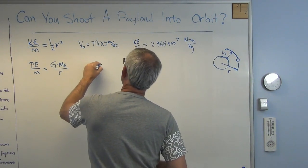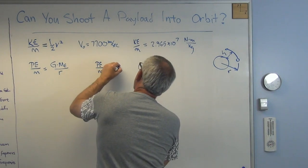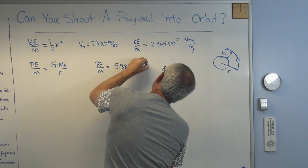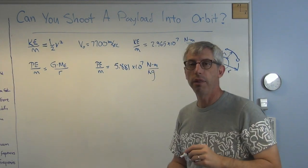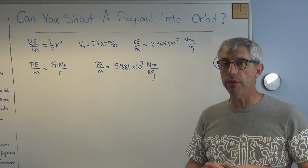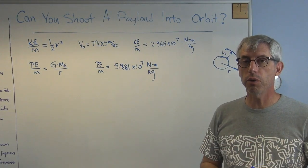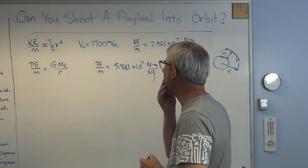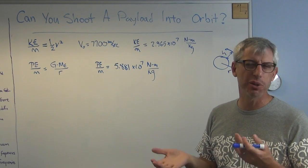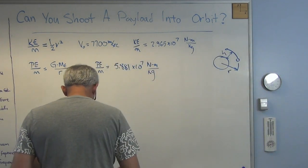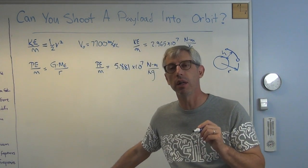If you put all those numbers in, this turns out to be 5.881 times 10 to the 7th newton meters per kilogram. So we've got to add those two up. The sum of those two is the kinetic energy you'd have to have at the surface in order, in the form of kinetic energy to get to that orbit. And that's if there was no air, there's no air slowing you down. How are we going to do this? We've got to have that much at least, but we're going to lose a fair amount trying to get through the atmosphere. Let's say we're going to lose 25 percent.